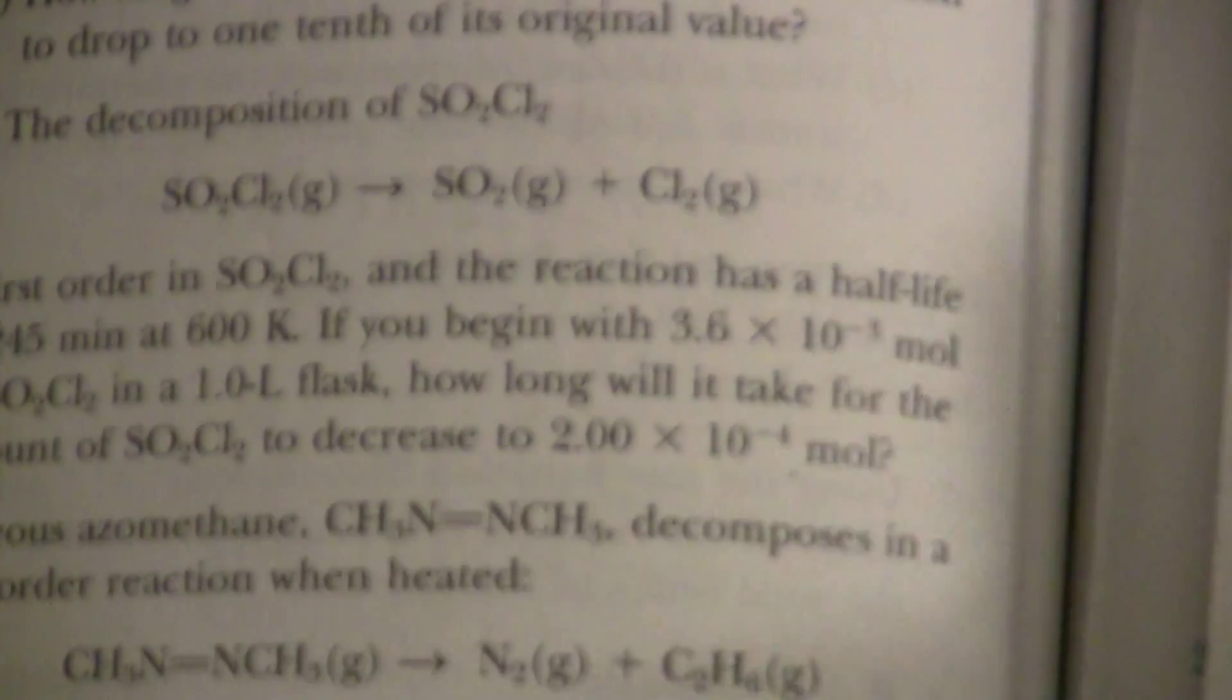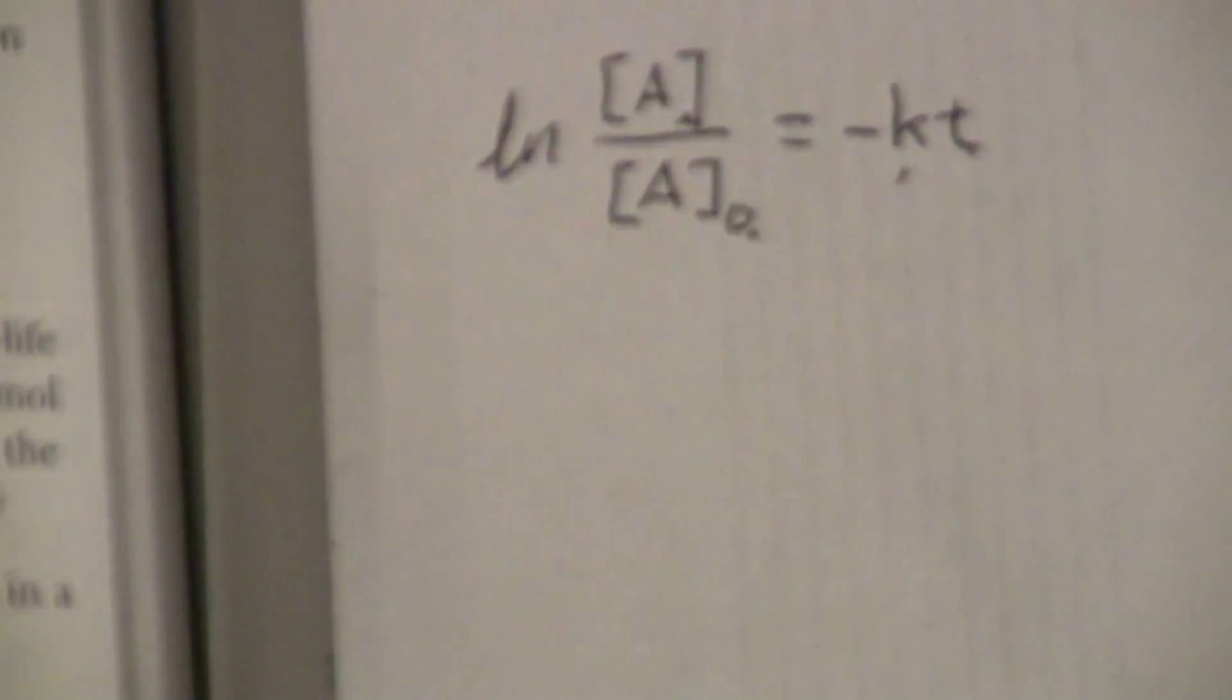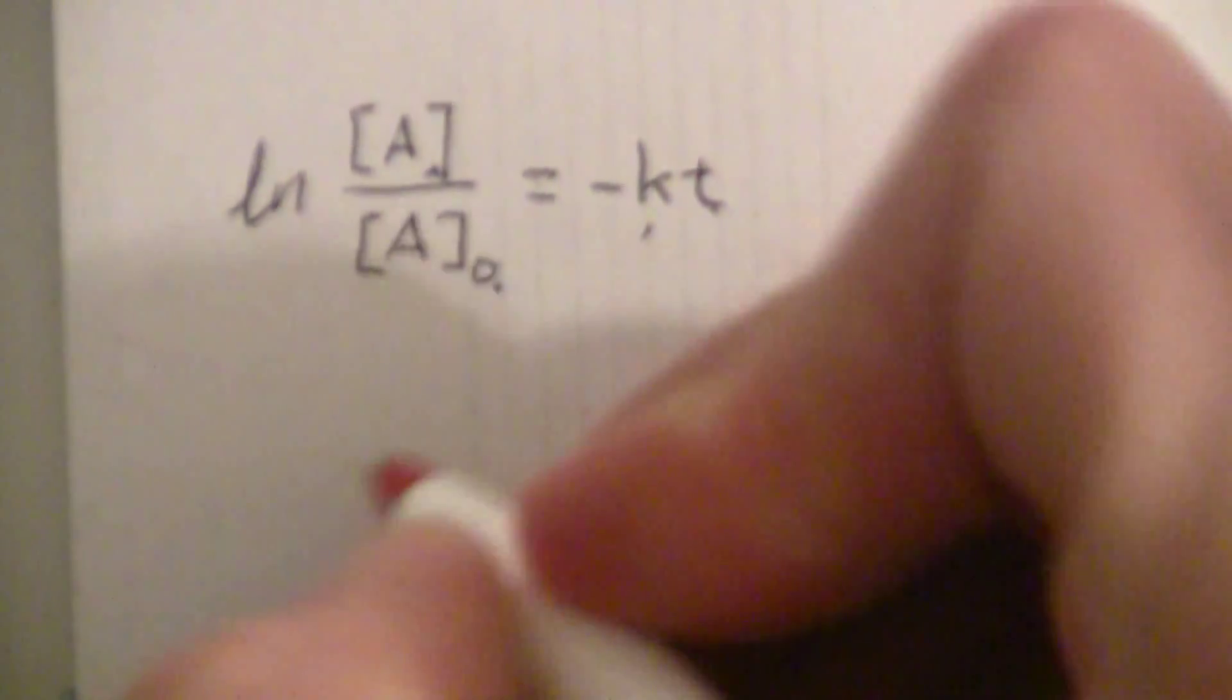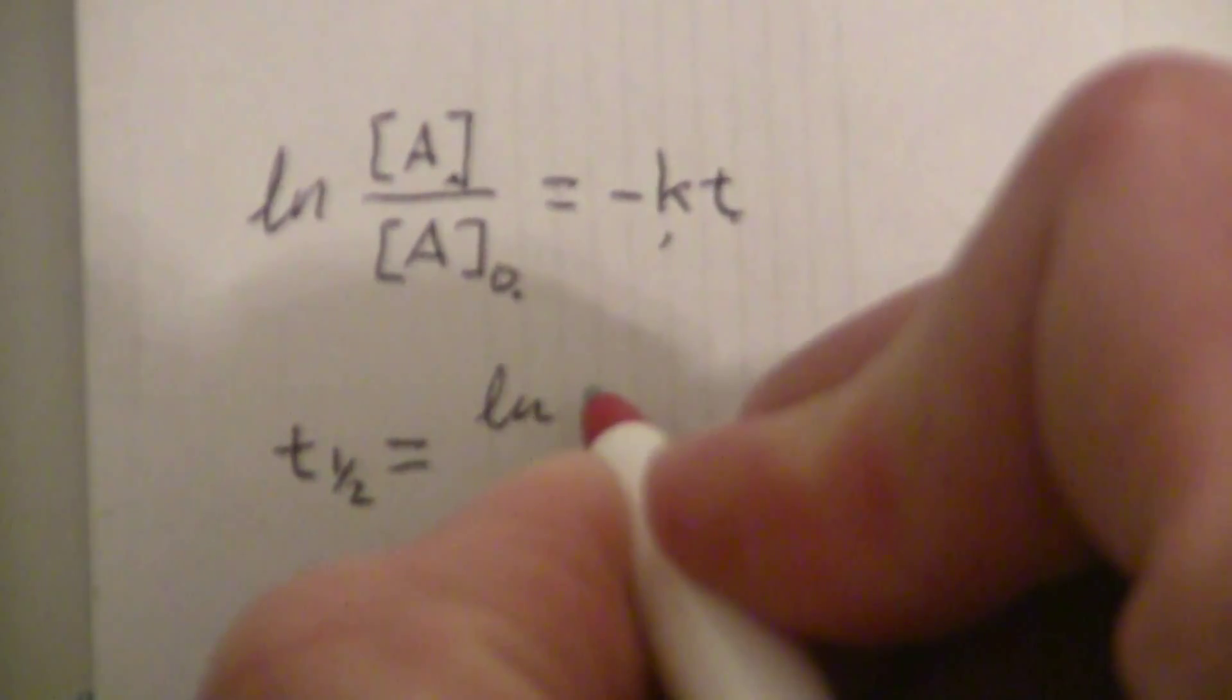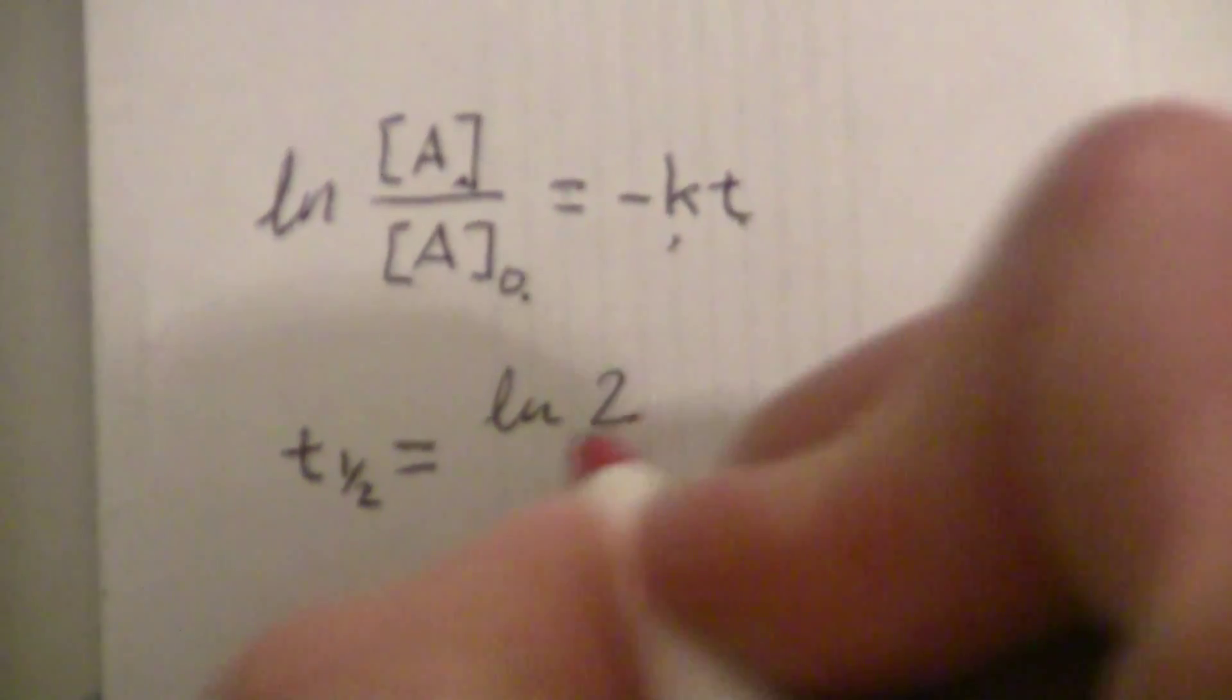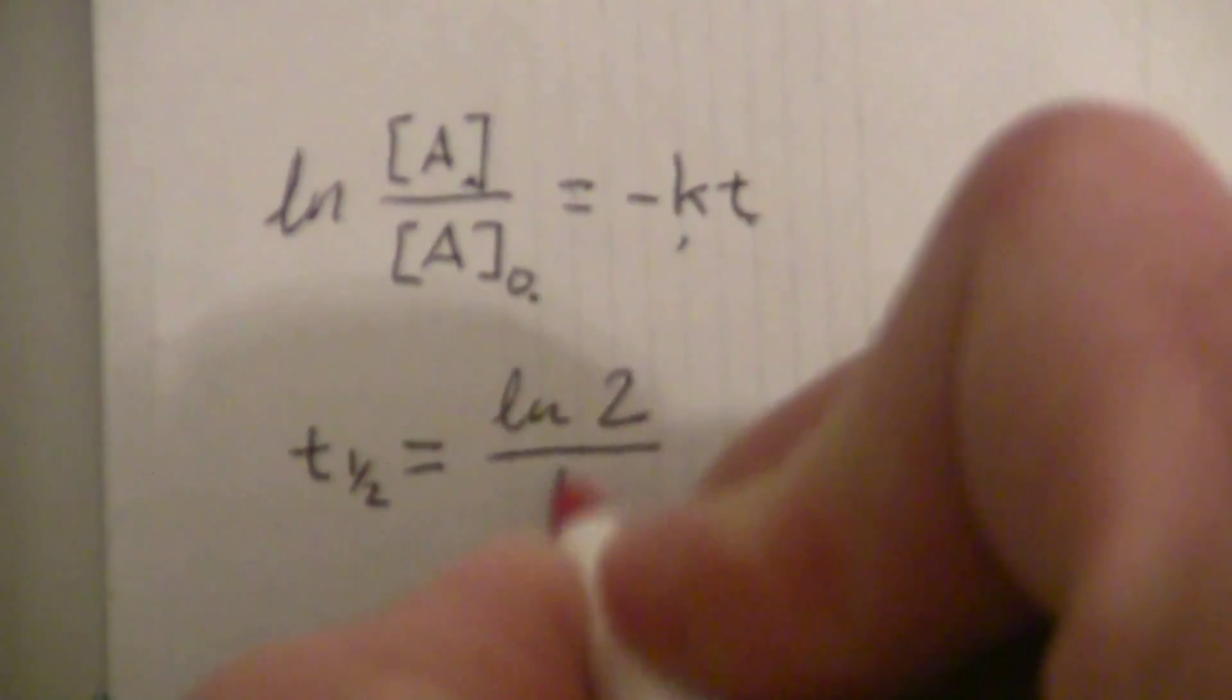And so, what I need to do is, I need to know the relation between the half-life, the T1 half, for a first-order reaction, is the natural log of 2 over K.